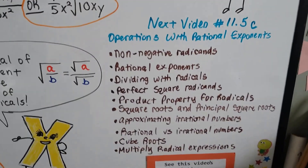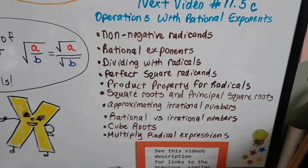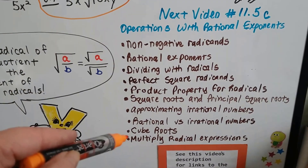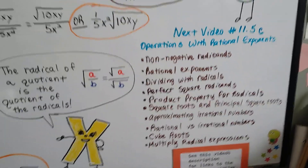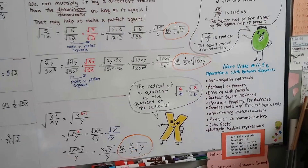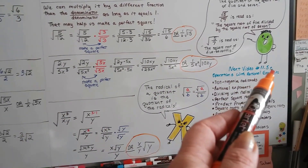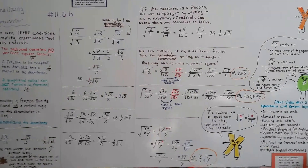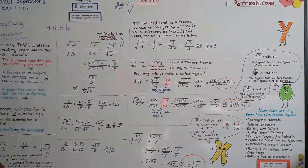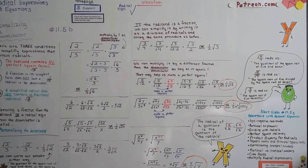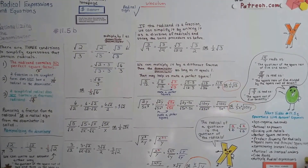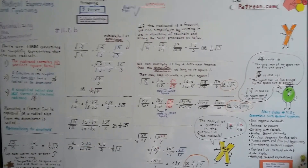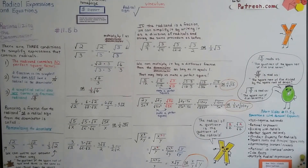Our next video, 11.5c, we're going to talk about operations with rational exponents. Like always in this playlist, if you want to see any of the previous videos for chapter 11, they're all in the description so you can just click on them. If you're lost or confused, watch the video again or go back to 11.4, 11.3, or even 11.1 and start from the beginning of the chapter — if you're confused, that means you missed something. I hope you're doing okay. We're almost done with Algebra 1, only a couple more chapters. I'll see you next video. Bye.